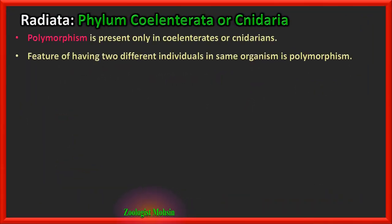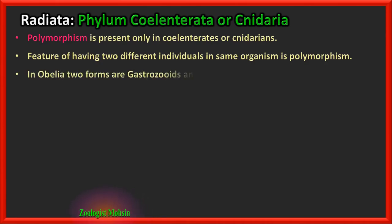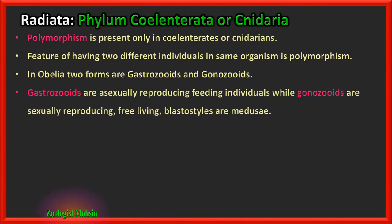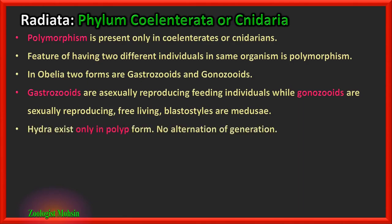Polymorphism is present only in coelenterates or cnidarians — no other phyla have polymorphism. In Obelia, two forms are gastrozooids and gonozooids — gastrozooids are asexually reproducing feeding individuals while gonozooids are sexually reproducing. Free-living blastocysts are medusae. Hydra exists only in polyp form — very important to remember — there is no medusae state and therefore no alternation of generation in Hydra.